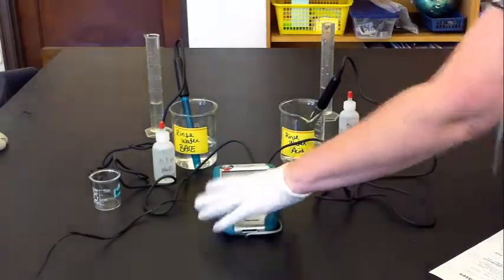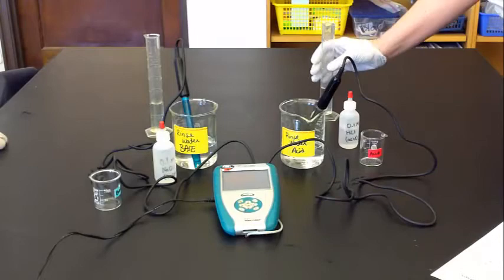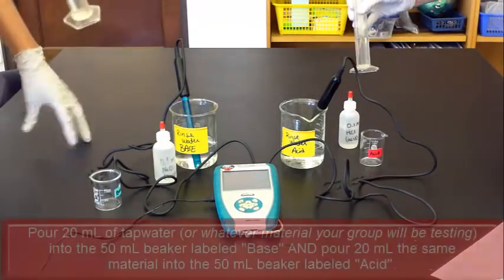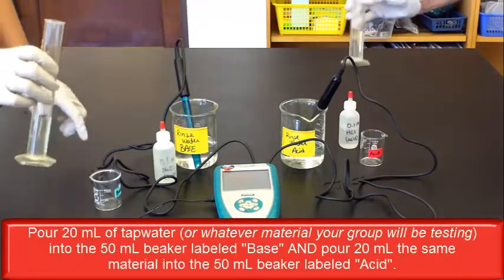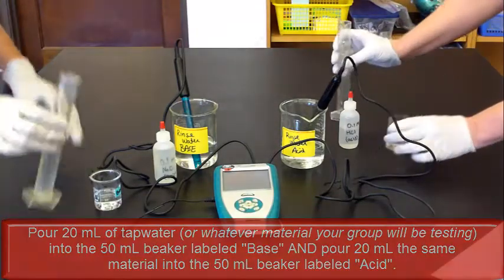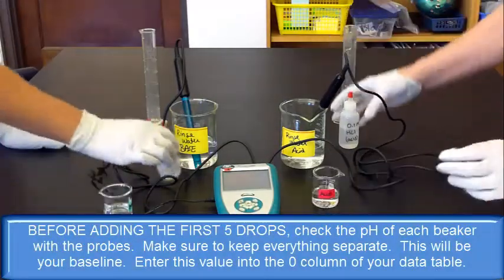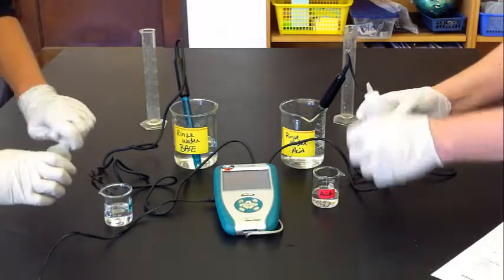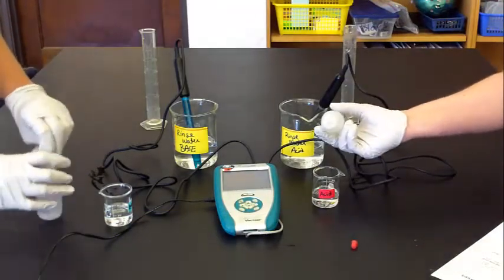Pour your 20 milliliters of water into a small beaker. Then take five drops of your acid or base, depending on which one you're doing, and then add that to your beaker. You notice how we're both doing it at the same time. Then you'll swirl around your solution so it gets mixed up.